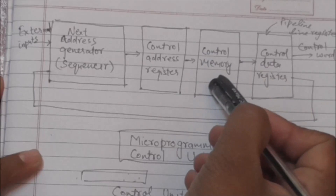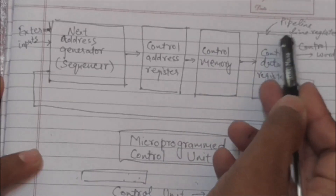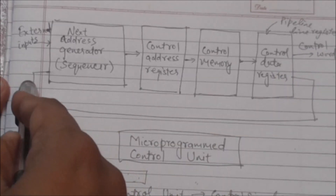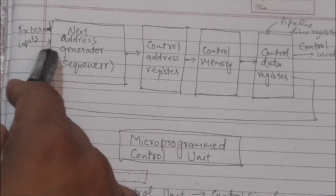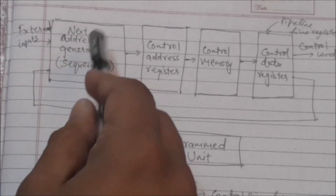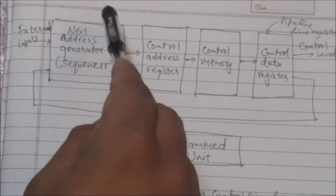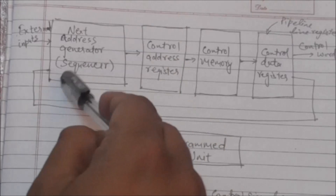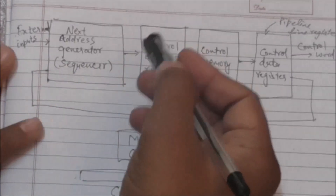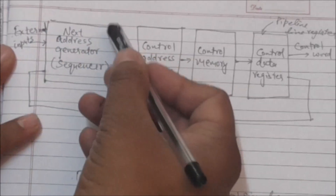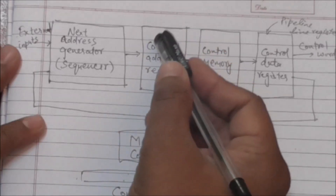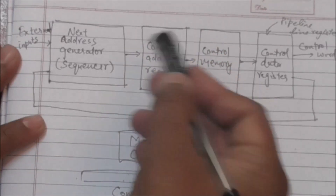When a micro-instruction is read from the control memory, the address of the next micro-instruction may also be a function of external input conditions. There is a circuit called the next address generator which generates the address of the next micro-instruction. It is also called the micro-program sequencer.